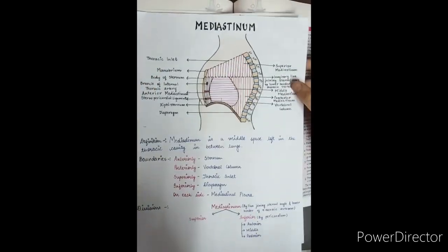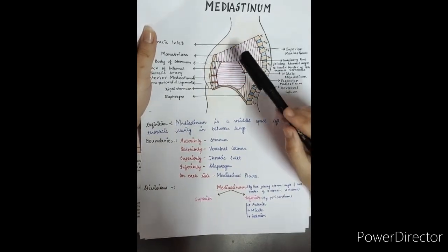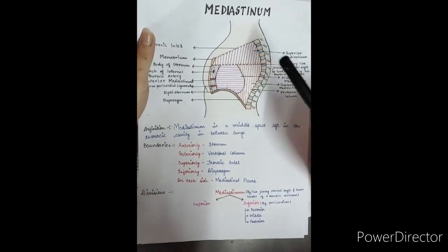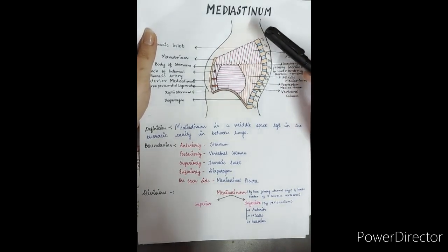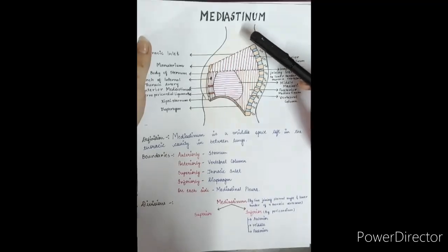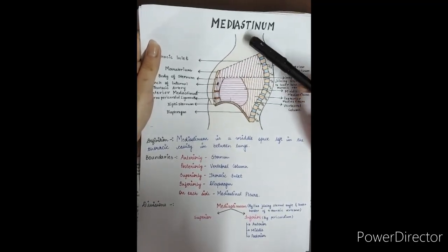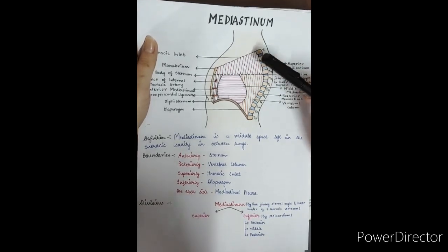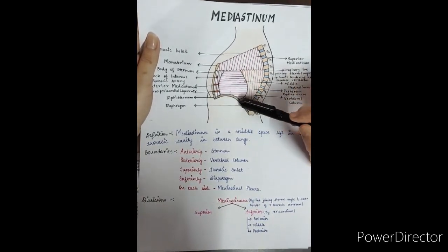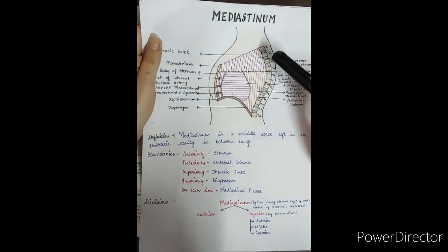Now, if we look at it: anteriorly it is bounded by the sternum, and superiorly by the thoracic inlet. Thoracic inlet means the junction between the neck and thorax — the neck structures pass into the thorax region through the thoracic inlet. Then, posteriorly by the vertebral column, and inferiorly by the diaphragm. Now let's see the divisions.